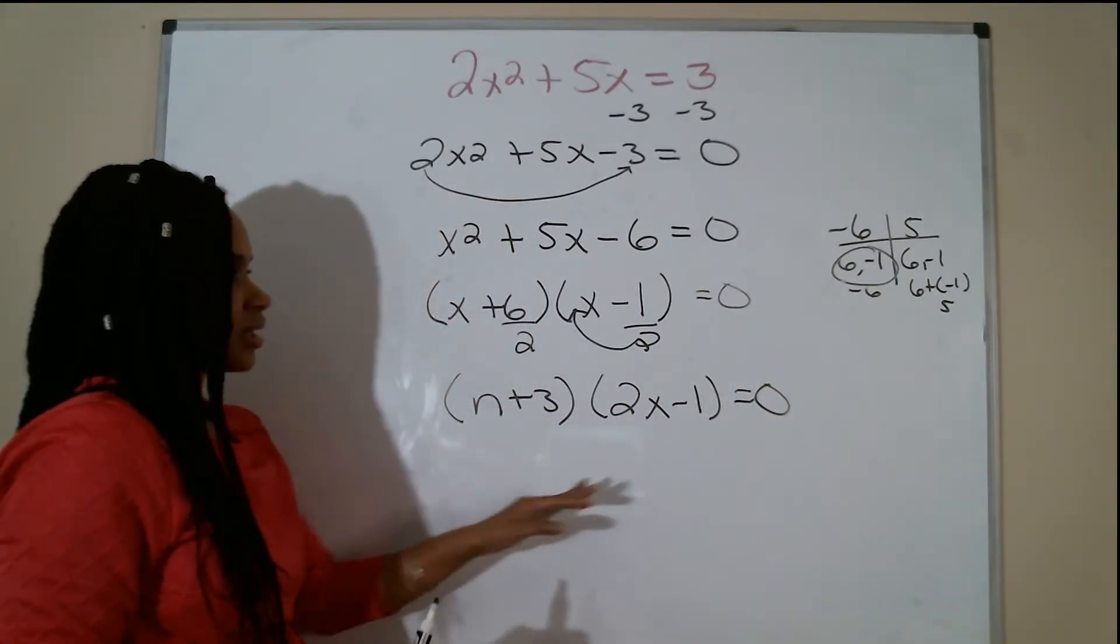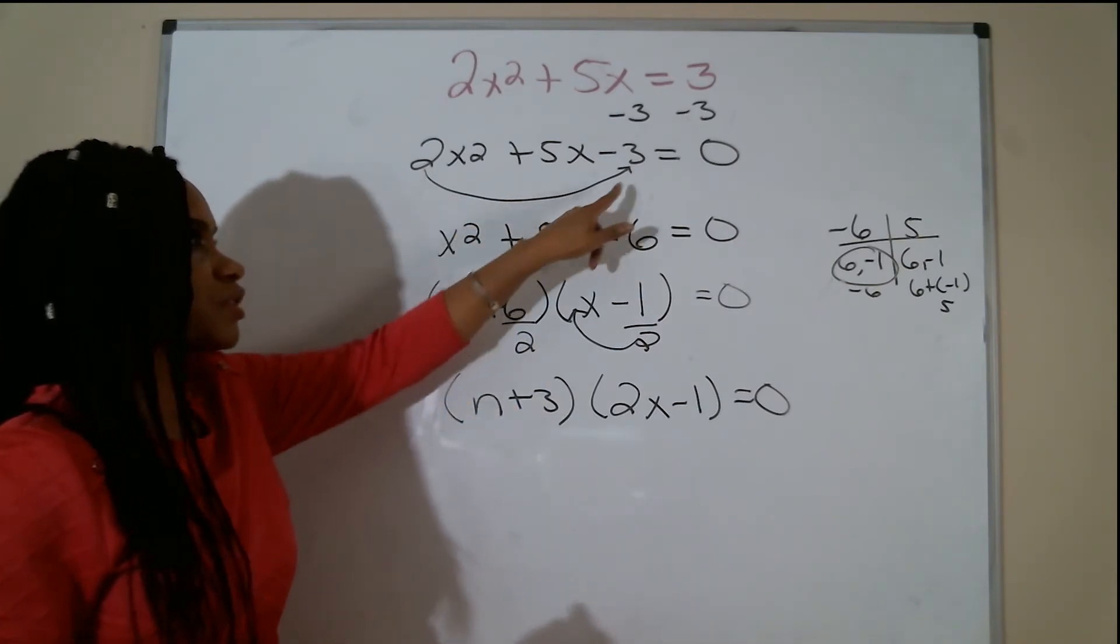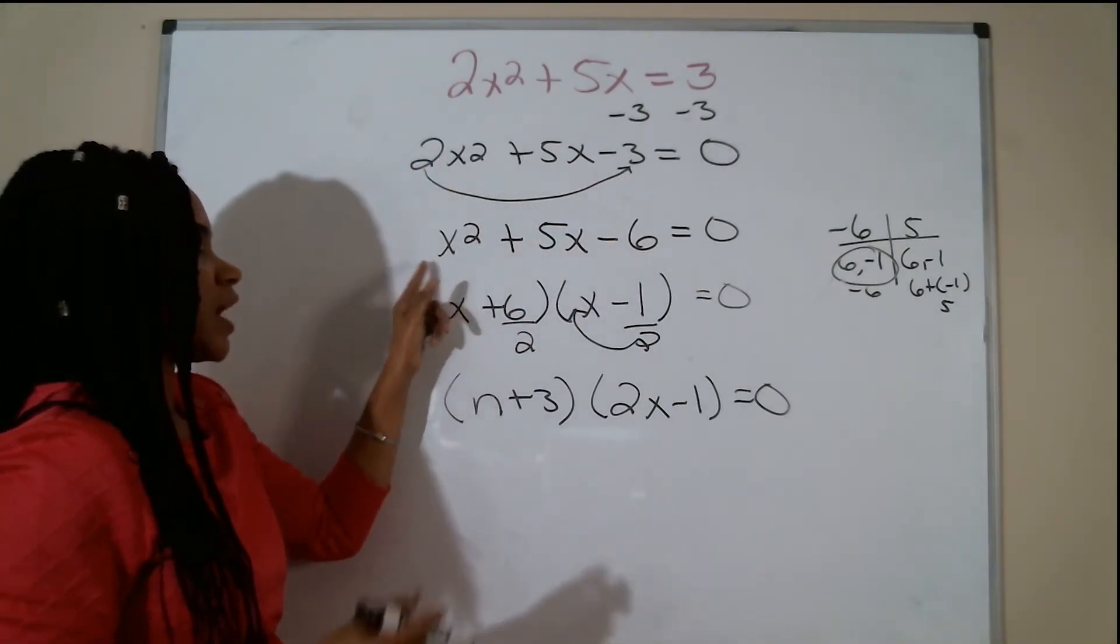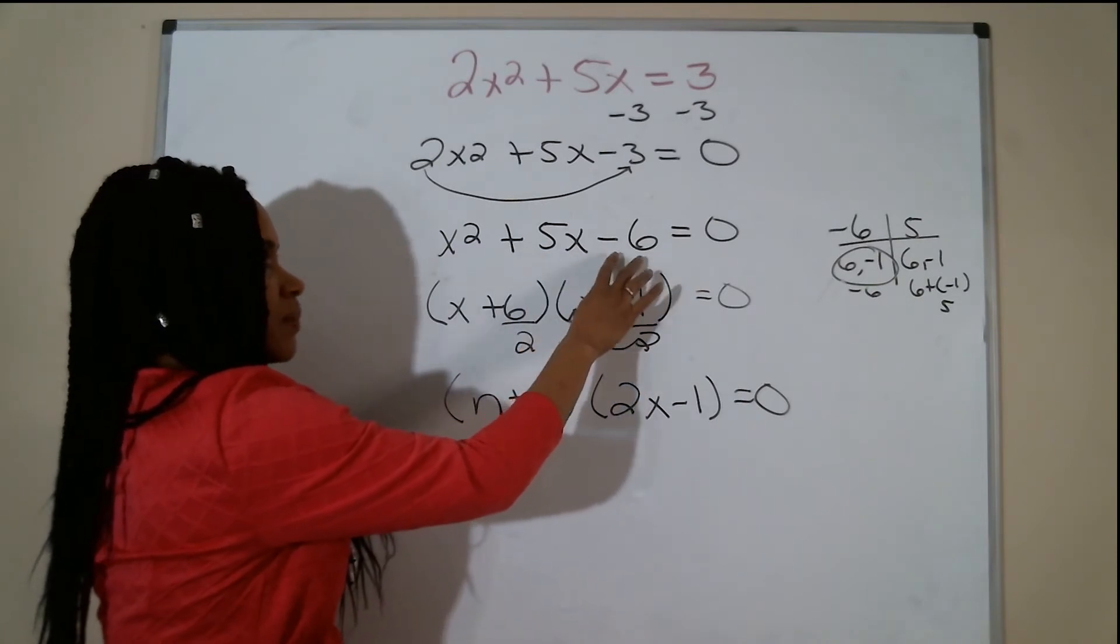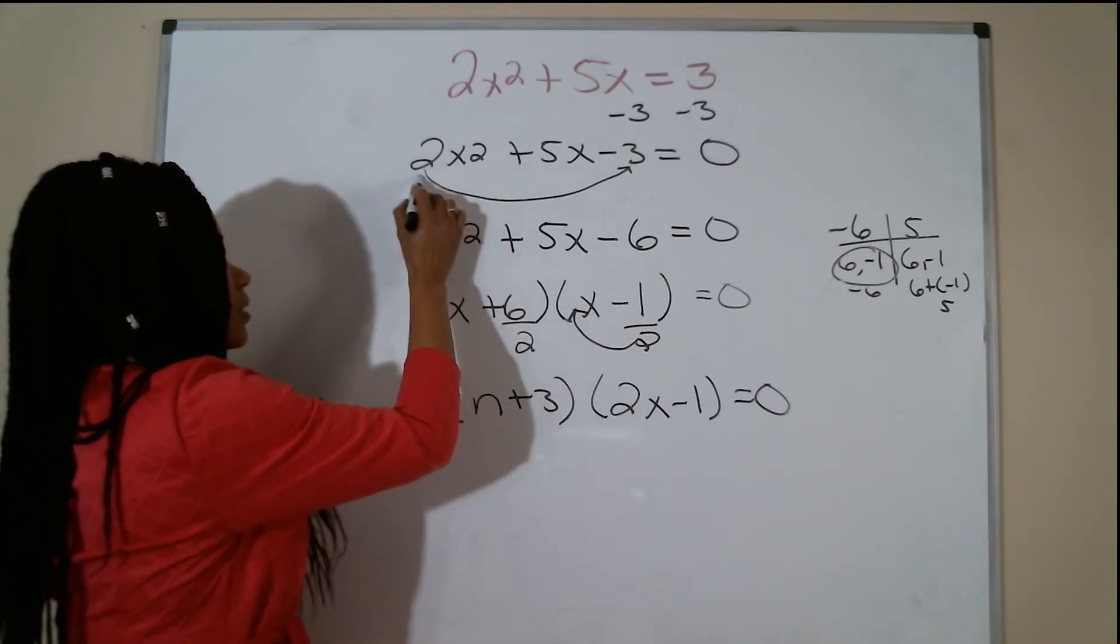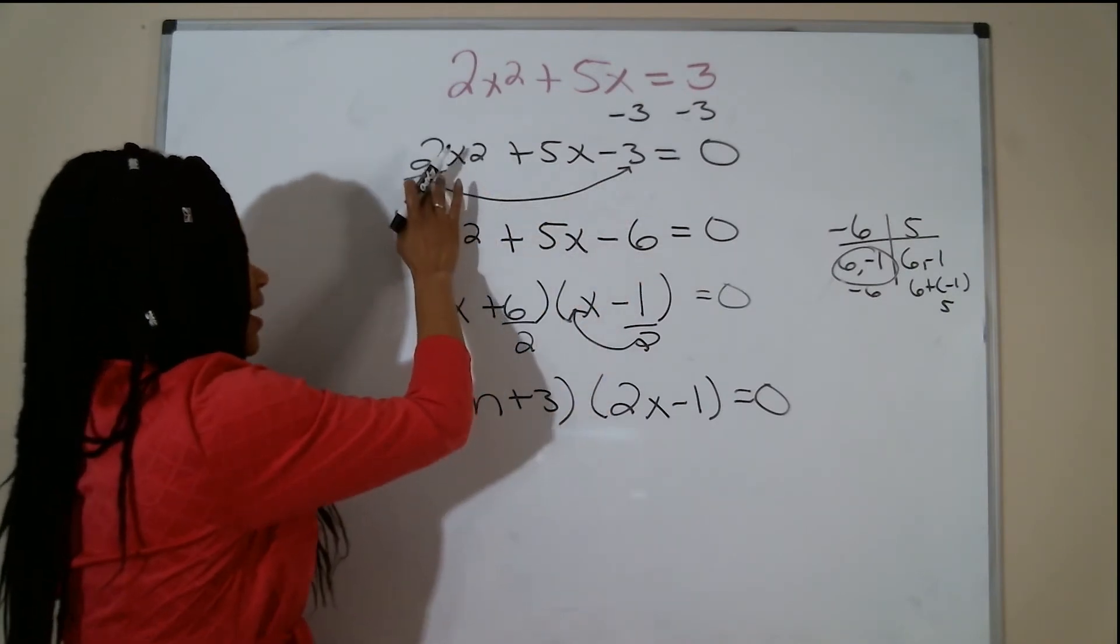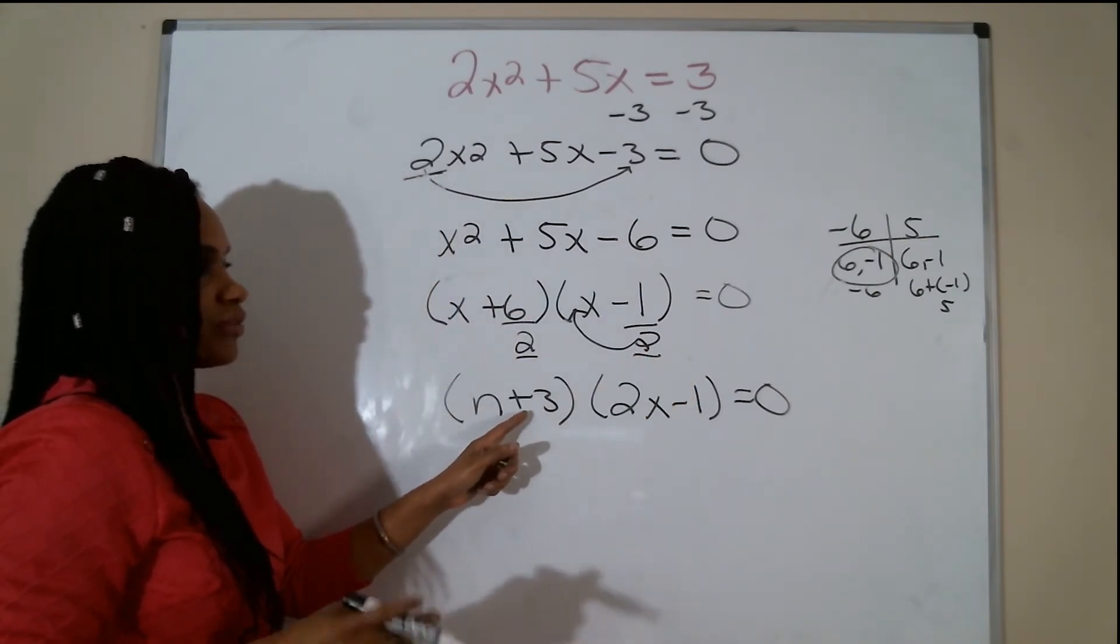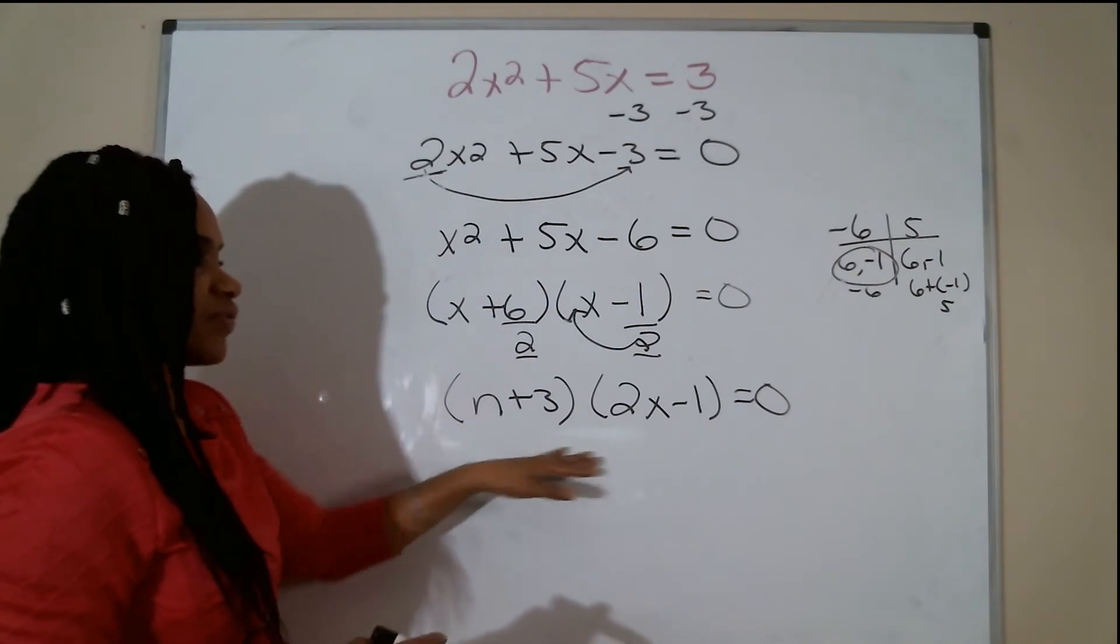So I have factored this equation. Just to recap the slip and slide method: slip that first term to the end and multiply it by the last term. I got negative 6. Two factors of c that equal b. My 2 factors were 6 and negative 1, and I wrote my 2 binomials. I divide both of my factors by 2. If you can reduce it, reduce. If you cannot, you move that number to the front of your binomial.